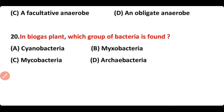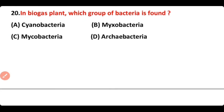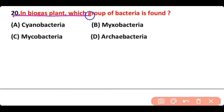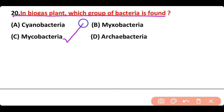Question number 20. In a biogas plant, which group of bacteria is found? Cyanobacteria, myxobacteria, mycobacteria, or archaeobacteria? The correct answer is option C — mycobacteria are present in biogas plant.